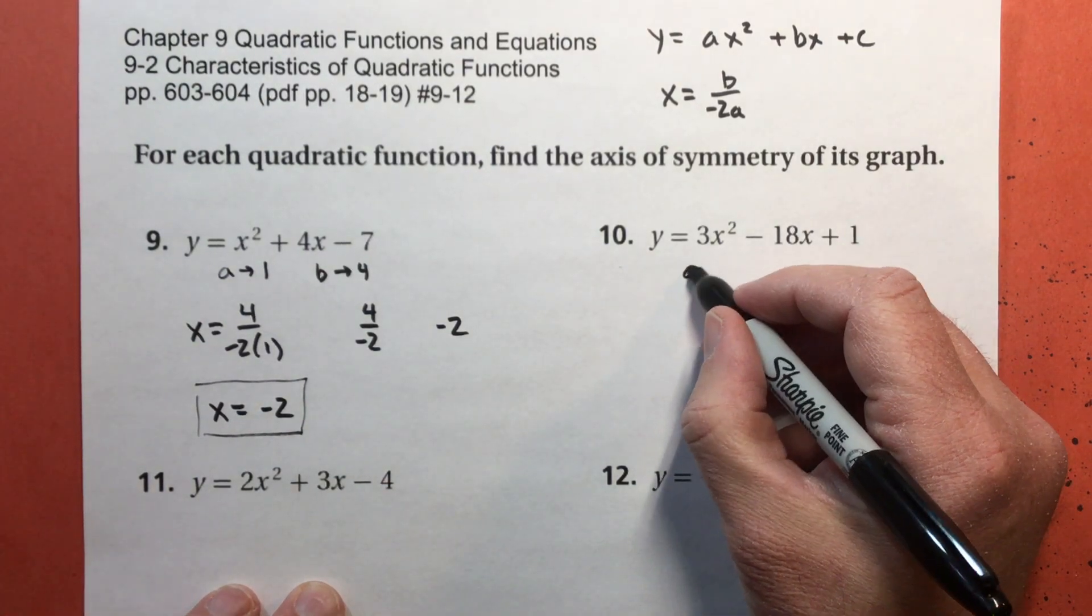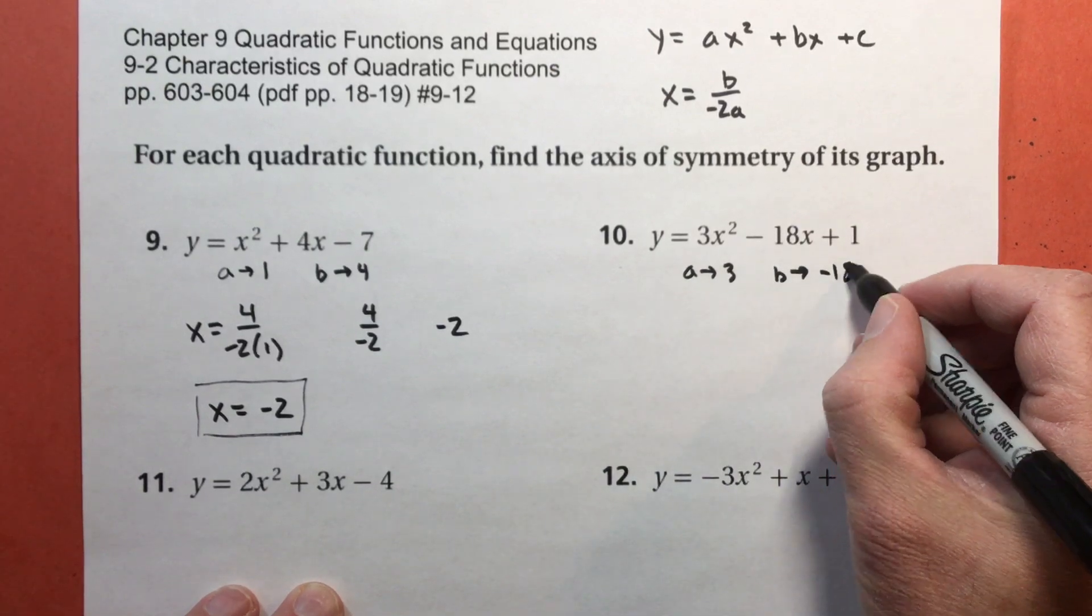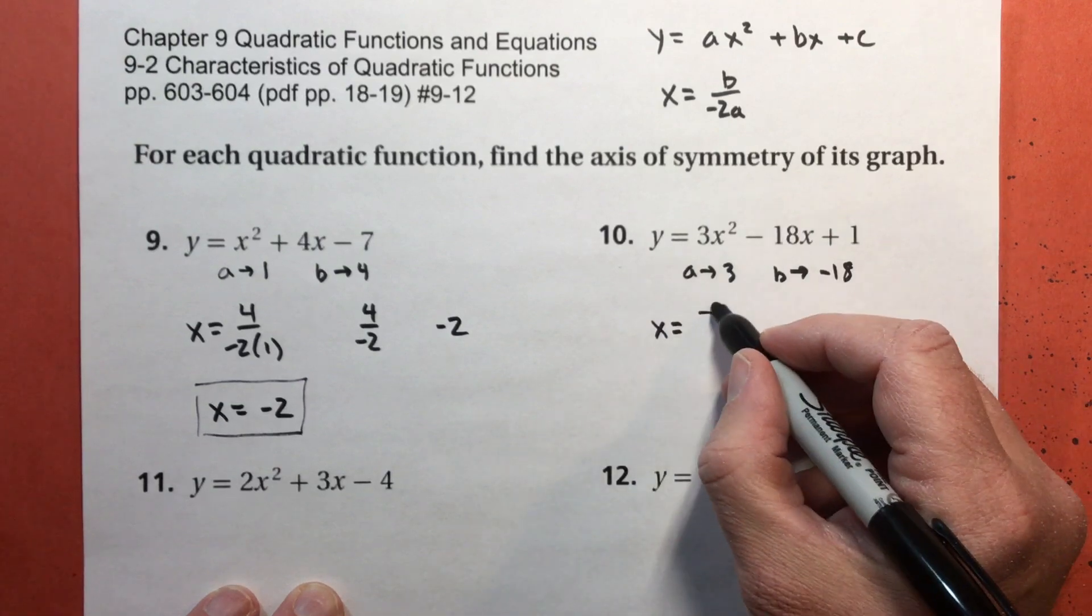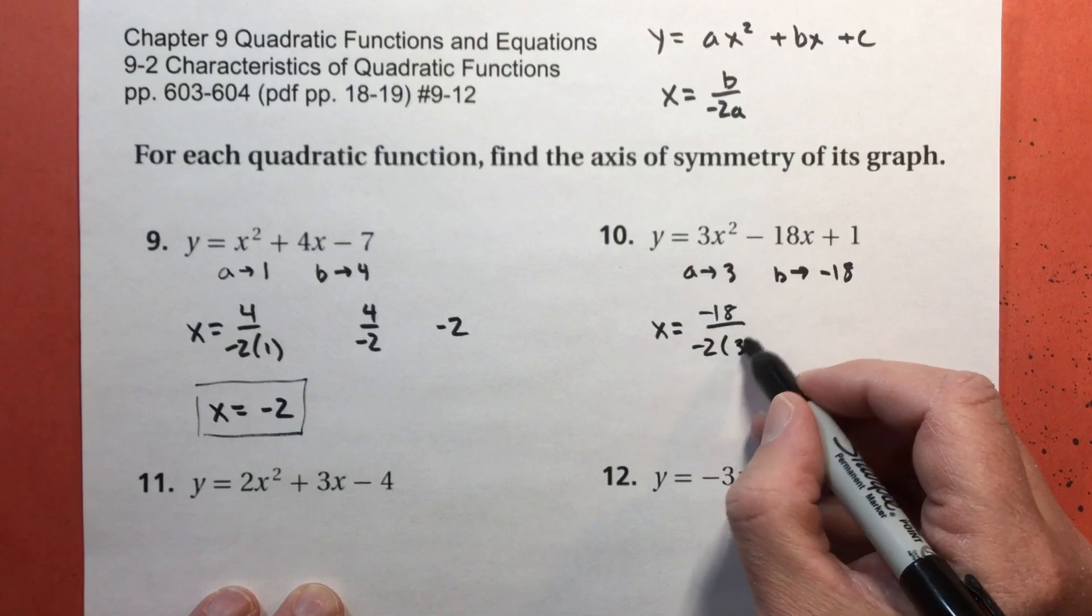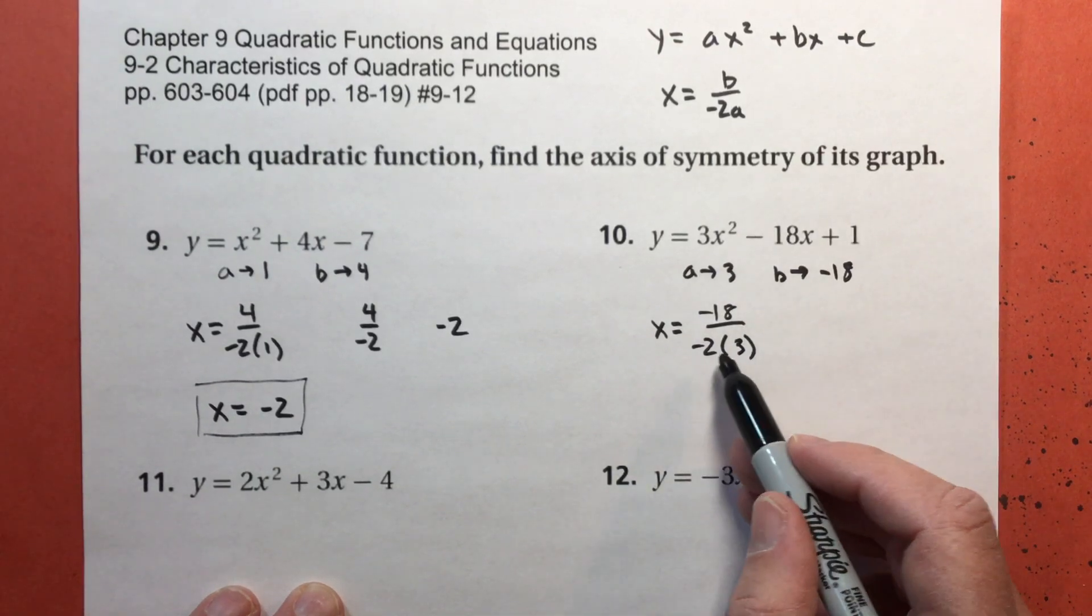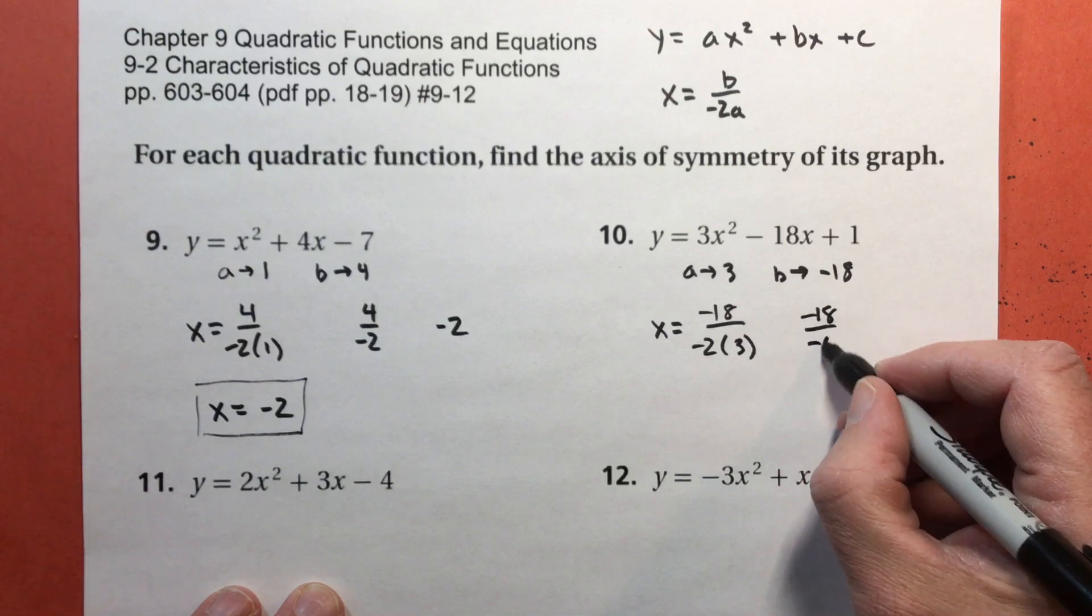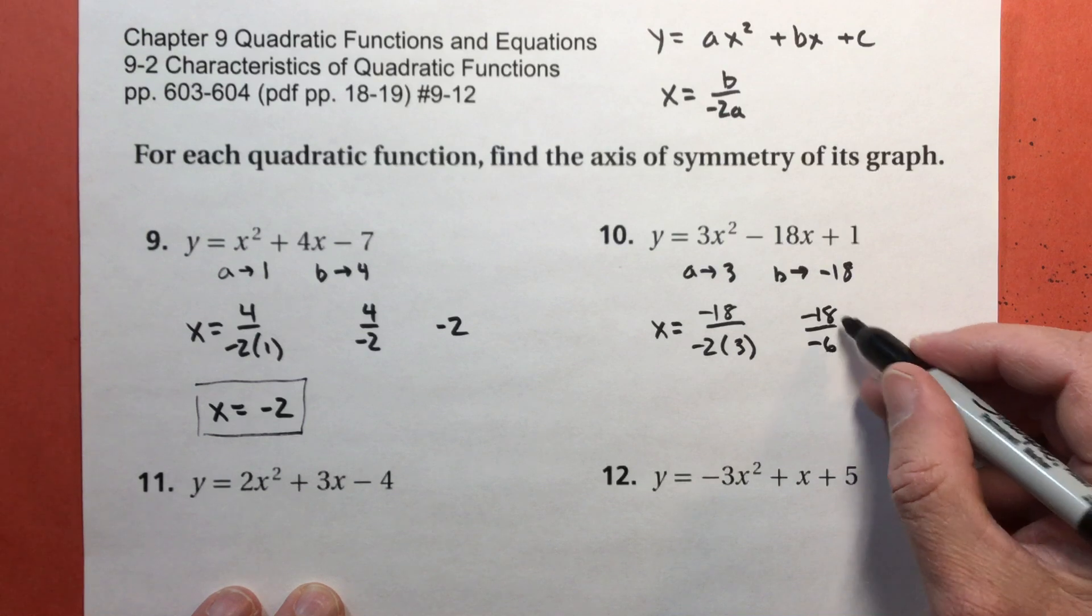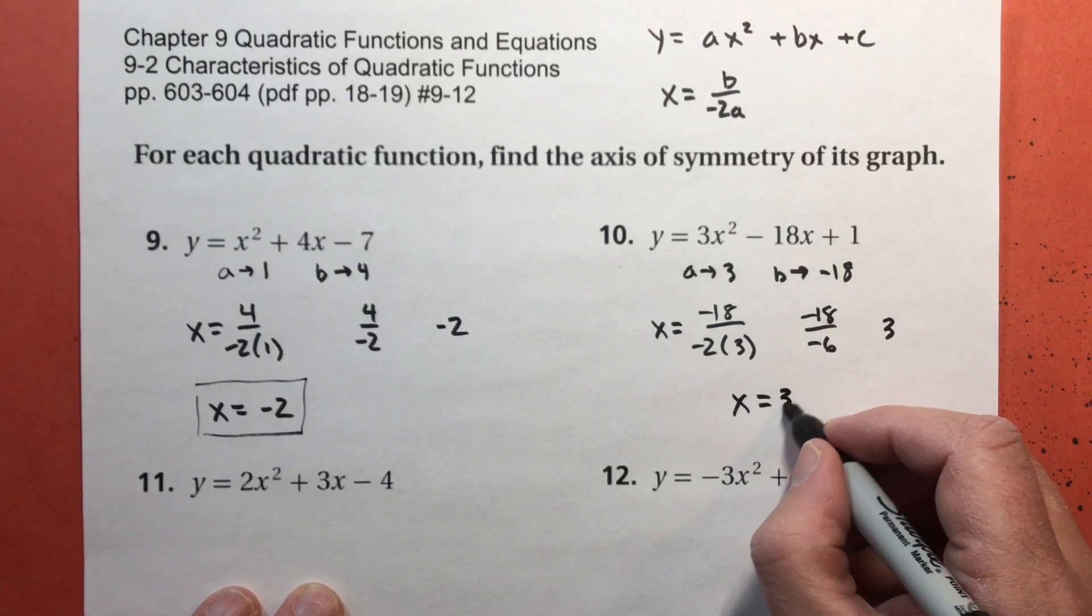Problem number 10. My a is going to be 3, and my b is negative 18. So I have b, negative 18, divided by negative 2 times my a, which is 3. Take care of the bottom first. Negative 2 times 3 is negative 6. And negative 18 divided by negative 6, a negative divided by negative is a positive. 18 divided by 6 is 3. So I write x equals 3.